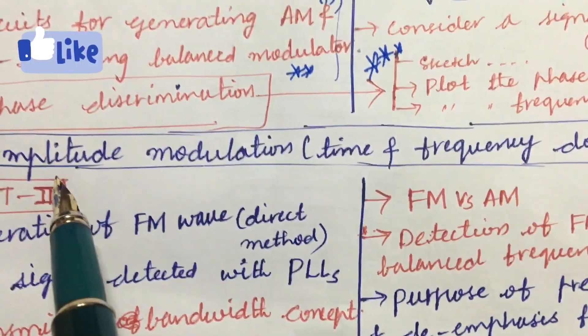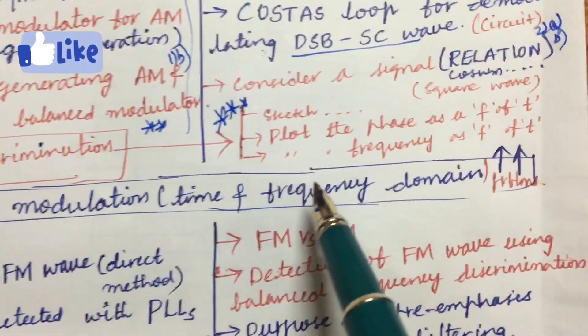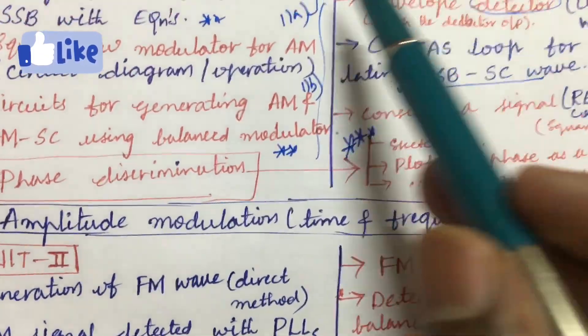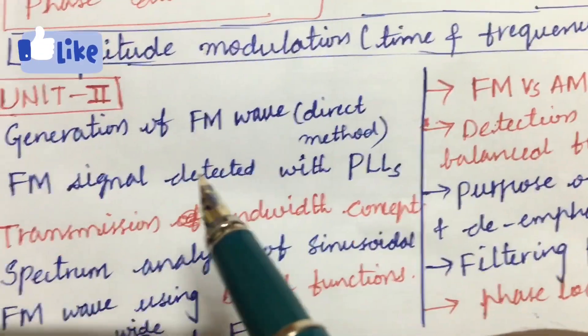And let's look at one more question where the problem will be asked to work out the amplitude modulation time and frequency domain in the problems related to it, and the phase discrimination is also asked sometimes. Please do work out all this in order to score 30 out of 30 marks.